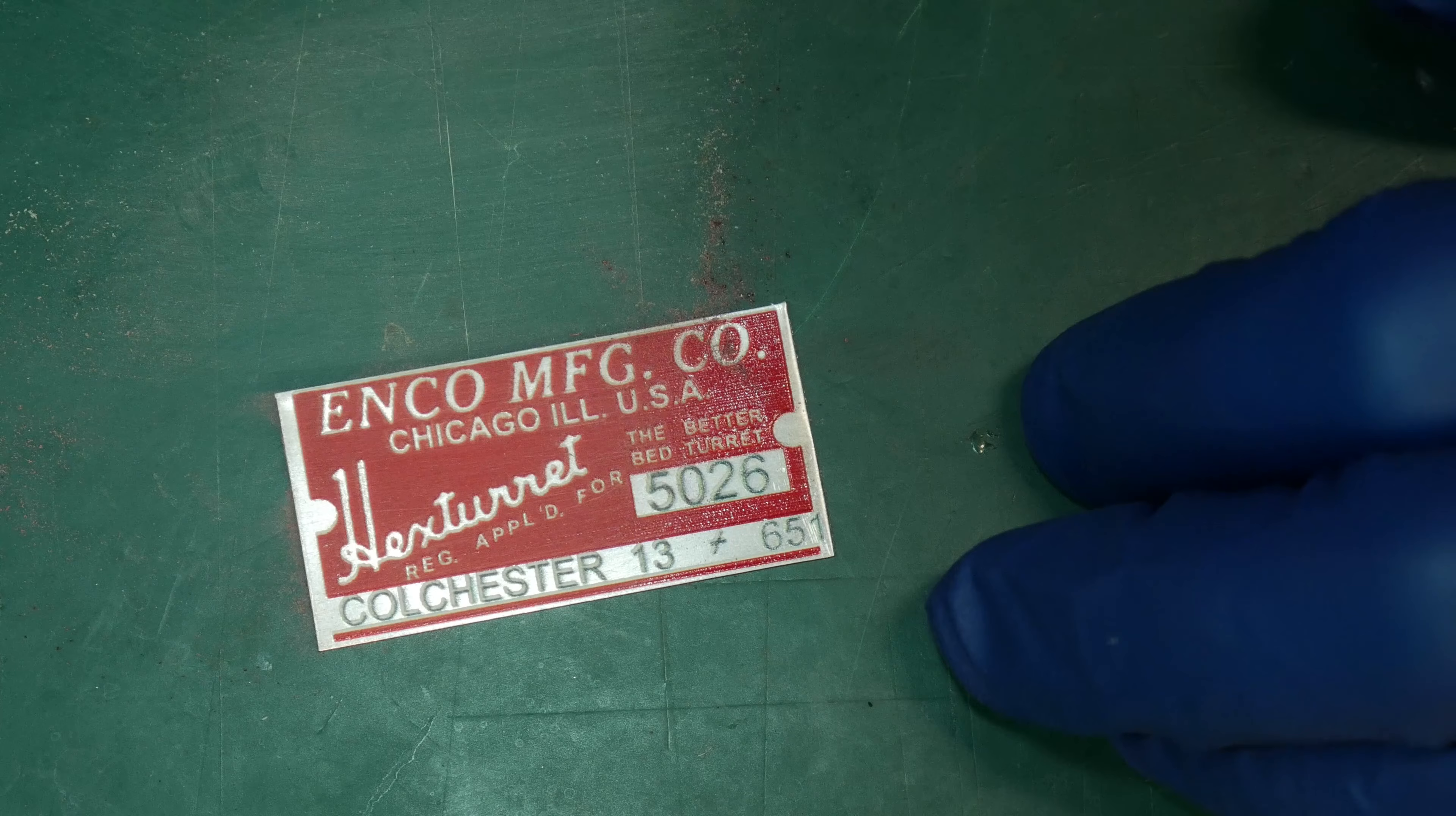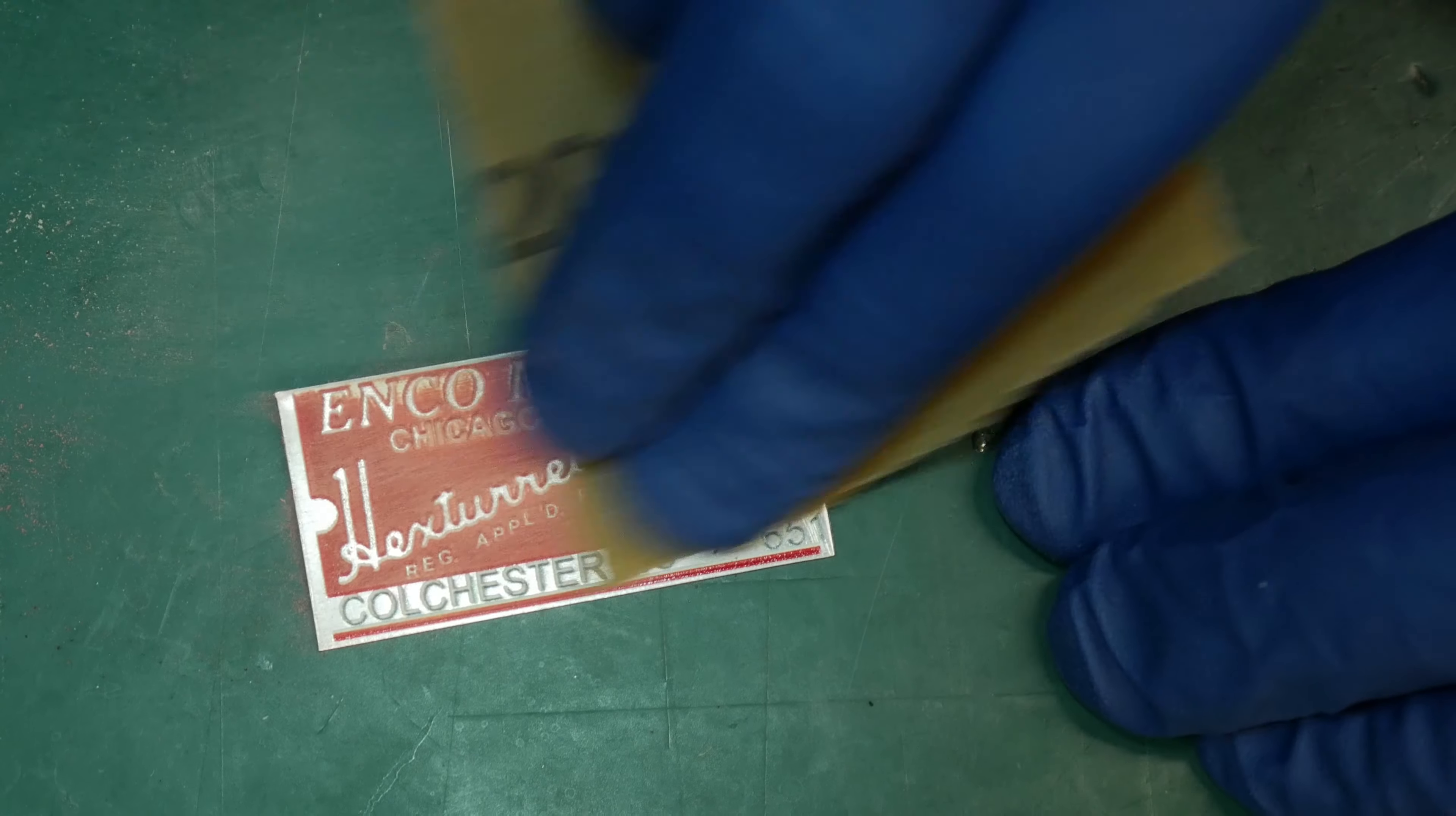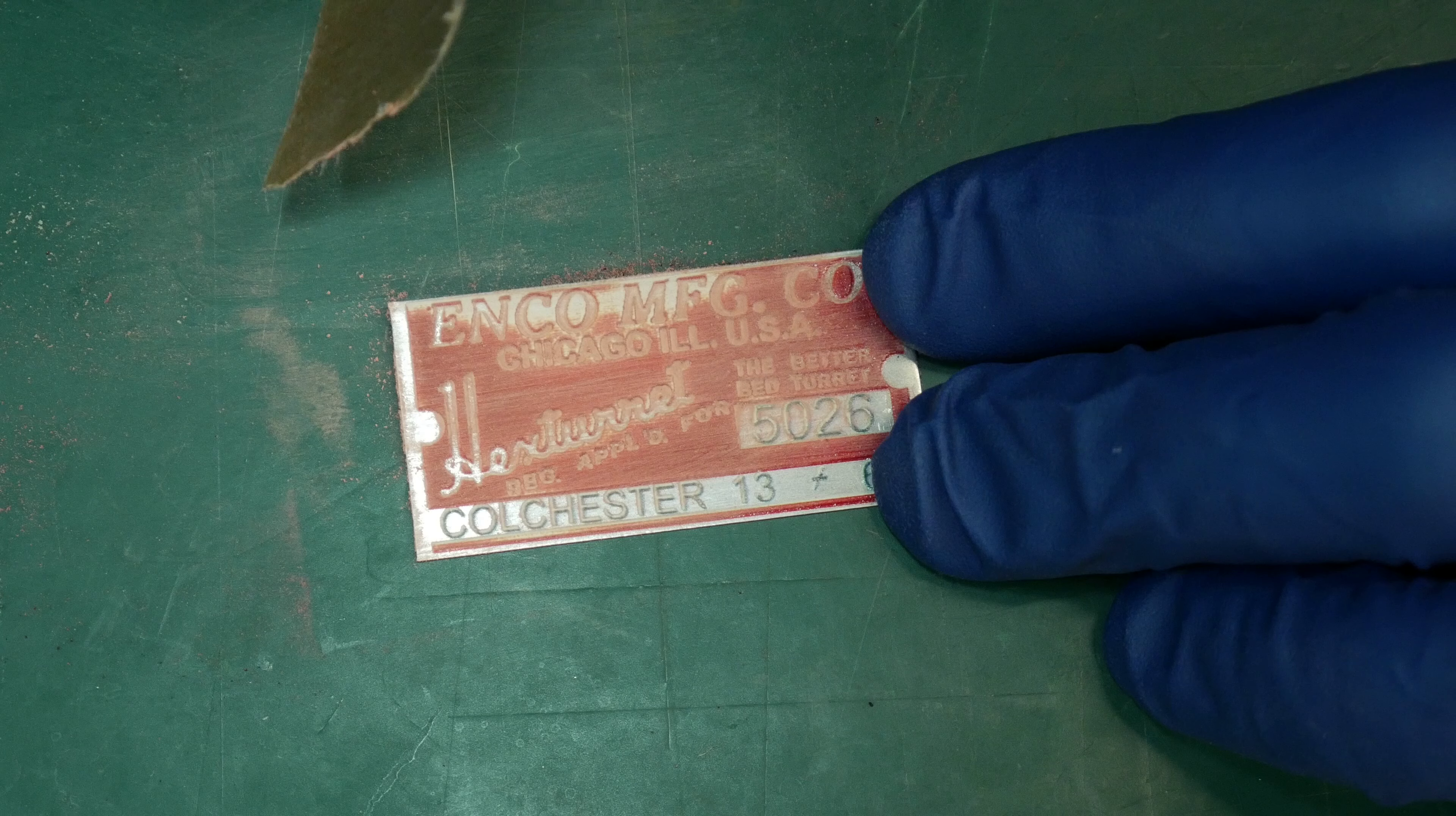But since the Scotch-Brite didn't hurt it, I took some sandpaper to it really to give it a test. And the sandpaper does take it off, but I would expect the sandpaper to take it off a regular label. So overall, I have to say I'm really pleased with how this turned out. I think I'm going to have to chalk that up in the win column. And I think it's a process that I can continue to improve upon.